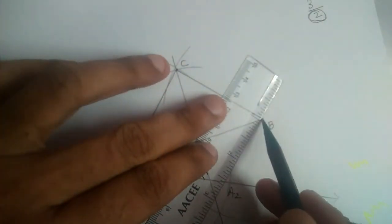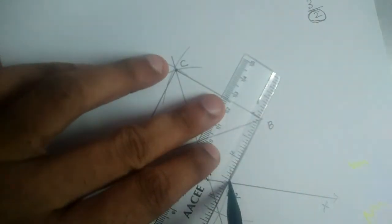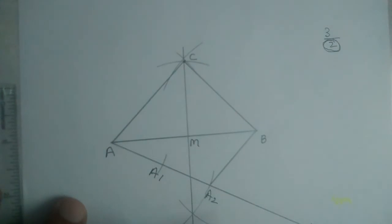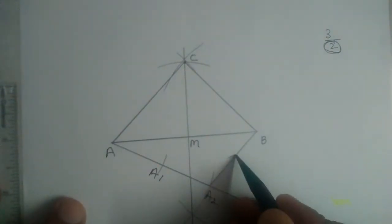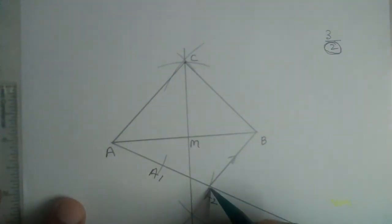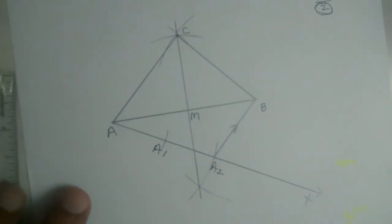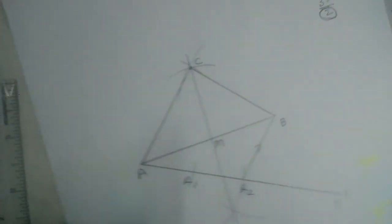Now we should join B with A2. Now we should draw a parallel line to BA2 from the numerator number, that means from A3. But A3 is not there here. That means we should have drawn one more arc.